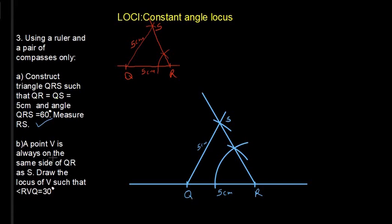So moving to part B, a point V is always on the same side of QR as S. Draw the locus of V such that angle RVQ is equal to 30. So for us to understand this, we will have to sketch again. And just to complete part A, we have forgotten about RS. So we are supposed to measure RS.